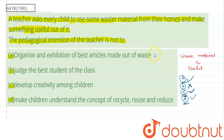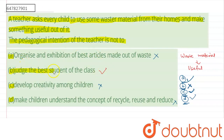So we have seen that options A, C and D are all intentions of the teacher, making them incorrect answers to this question. Option B — judging the best student of the class — is not the teacher's pedagogical intention. Therefore, the correct answer is option B. I hope the question is clear. Thank you.